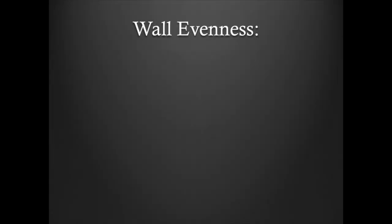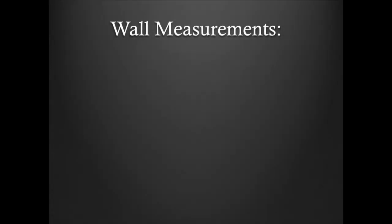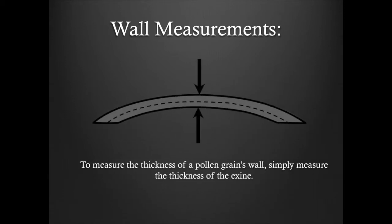Wall evenness. The thickness of the wall may vary. It may appear even all the way around the grain, or the wall may appear thinner or thicker at the poles. To measure the thickness of a pollen grain's wall, simply measure the thickness of the exine. Refer to the cartoon representation above for an example.